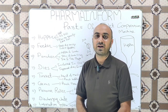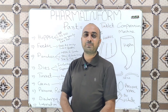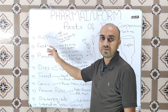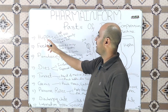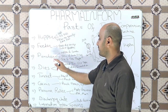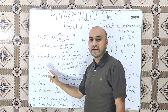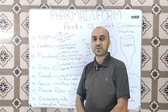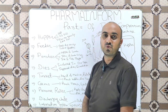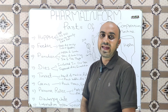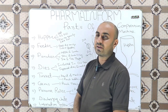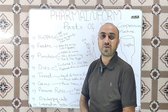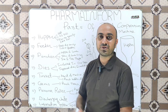The video topic is parts of the compression machine. A compression machine has the following parts: hopper, feeder, punches, dies, turret, cams, pressure rollers, discharging chute, lubrication system, and HMI. Now let's have a brief overview of each part of the compression machine.